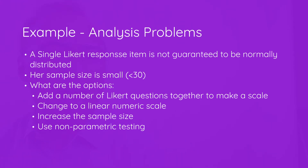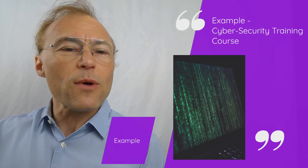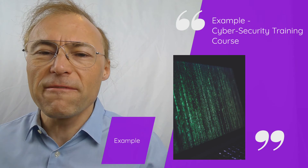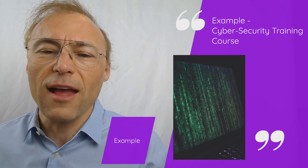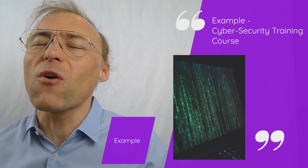So, what are her options? She could add a number of Likert questions together to make a scale — if you add 15 questions that all point to the same answer, they can become normally distributed. She could change to a linear numeric scale, which is usually normal, or she could increase the sample size, since we know that for sample sizes greater than 30 the central limit theorem applies. Alternatively, she may elect to use non-parametric testing. In this case, our researcher is convinced her training course will work and wants to proceed with her single Likert scale response.